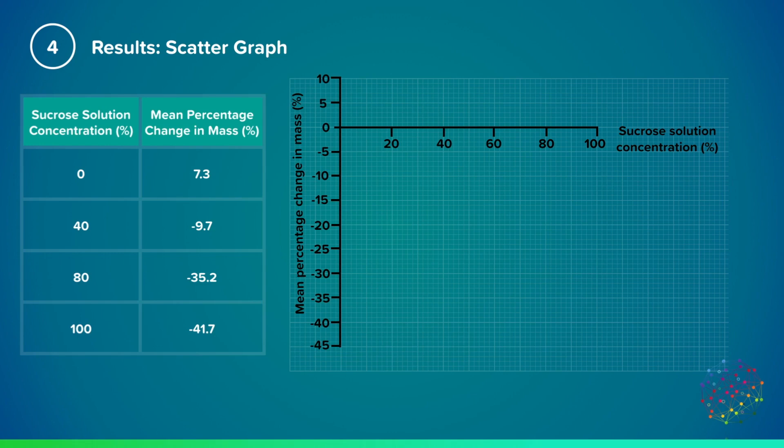The next step is to plot the data from the table. Make sure you carefully locate exactly where to plot each point using the axis and small squares on the graph paper. For example, at 0% concentration we must plot 7.3% change in mass. And then we follow through the table to plot all of our points.